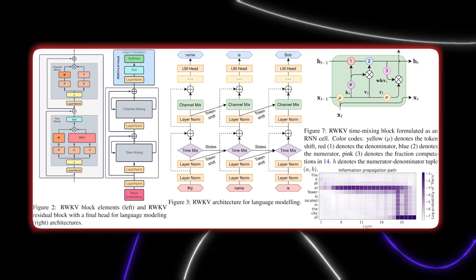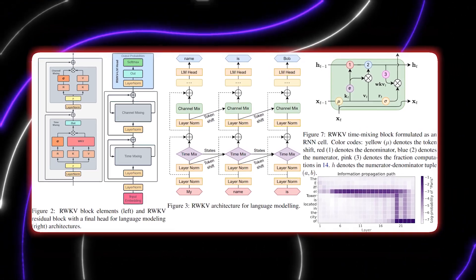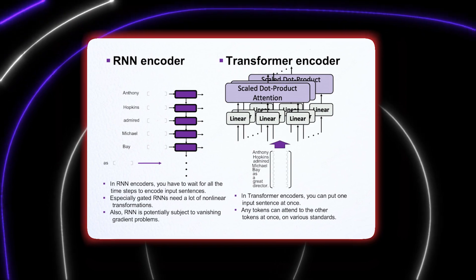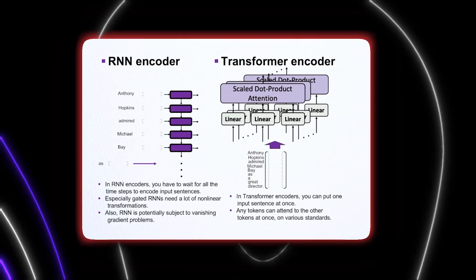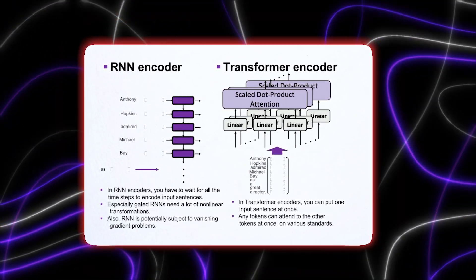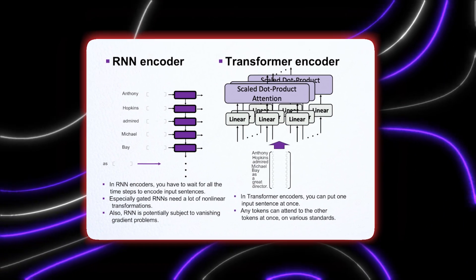RWKV stands for Receptance Weighted Key Value, and what it offers is to eliminate the limitations of transformers while not compromising on their performance. RWKV is a new architecture that combines another type of deep learning model known as recurrent neural networks and transformers, while avoiding the downsides of each model and only keeping the upsides.